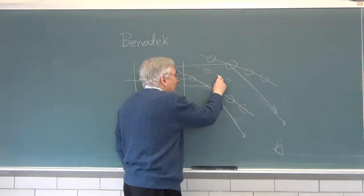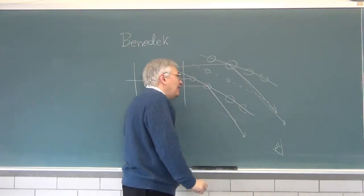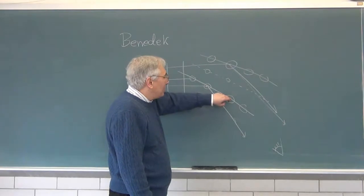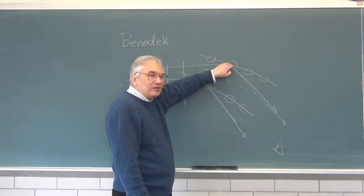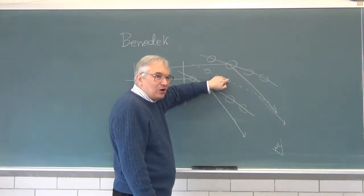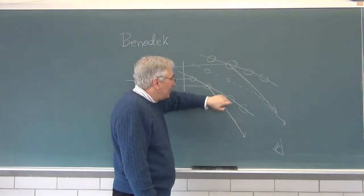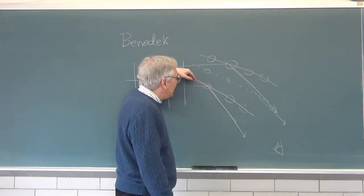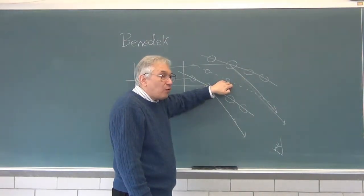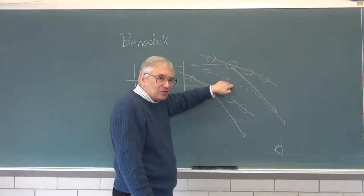Particles that are here scatter light that is 180 degrees out of phase. But you notice there are more particles here and here than there are there. And therefore, in net, there is some scattered light.